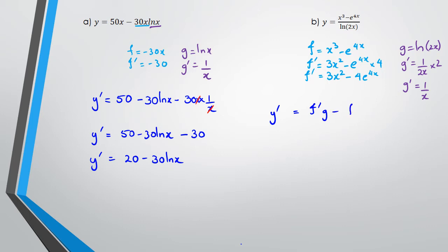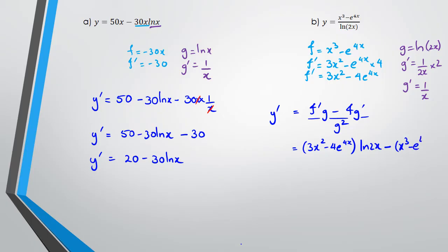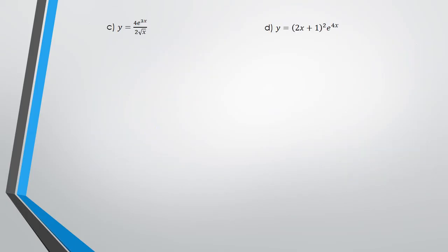Applying the quotient rule — F dash G minus F·G dash, all divided by G squared. F dash is 3x squared minus 4e^(4x), multiplied by G which is ln(2x), minus F which is x cubed minus e^(4x), multiplied by G dash which is 1 over x, all divided by ln(2x) squared. You can leave your answer like this — no need to simplify further in your exams. Make sure all brackets are in the right places.